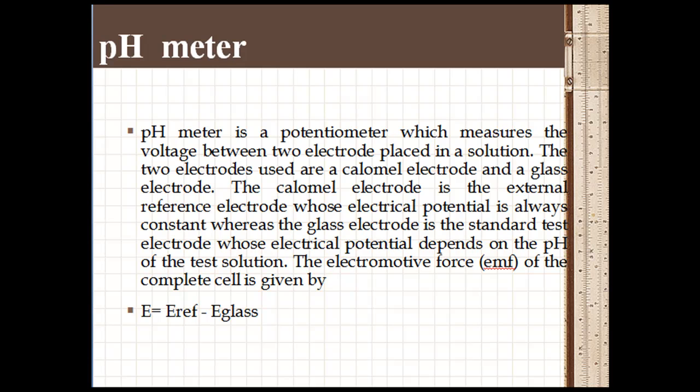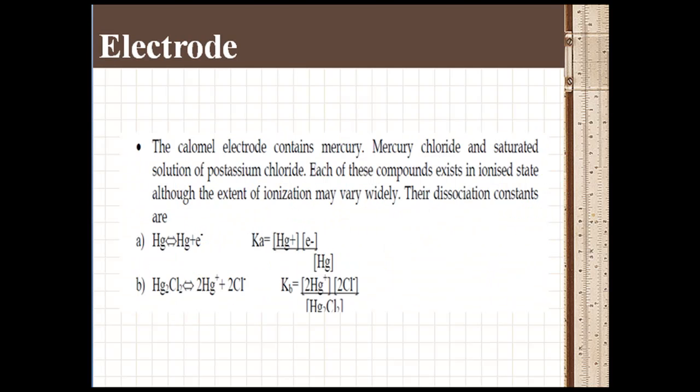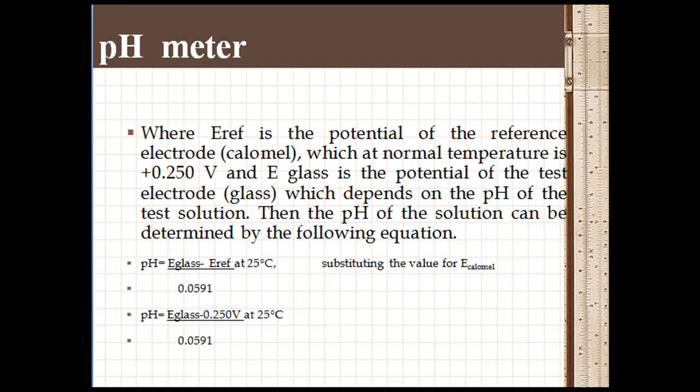The glass electrode is the standard test electrode whose electrical potential depends on the pH of the test solution. The electromotive force of the complete cell is given by E = E_reference - E_glass, where E_reference is the potential of the reference electrode, which at normal temperature is 0.250 volts, and E_glass depends on the pH of the test solution. The pH can be determined by the following equation: pH = (E_glass - E_reference) / 0.059 at 25 degrees Celsius.